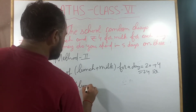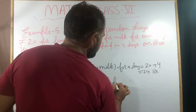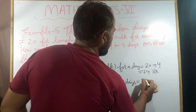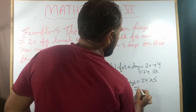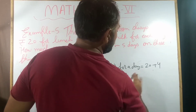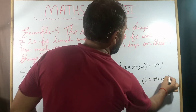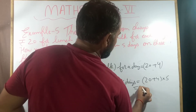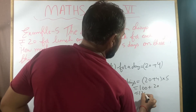Now, the cost of lunch plus milk for five days: we take the one-day total expenditure and multiply by five. So 20 plus 4, multiplied by 5 — that is 20 times 5 equals 100, plus 4 times 5 equals 20 — giving us 120 rupees.